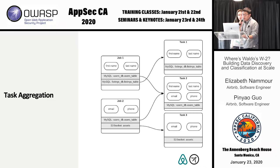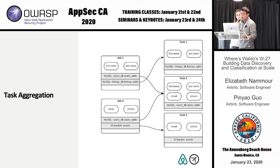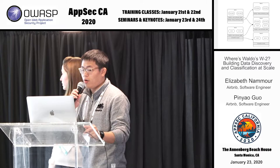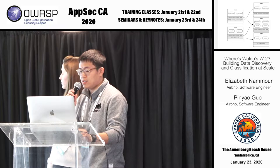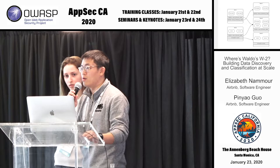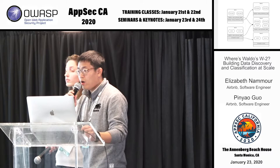Here's an example showing two jobs. Job one schedules to scan first name and last name on the users table and also the listings table on MySQL database. Job two is scheduled to scan email and phone number on the MySQL users table and also an S3 bucket. When we do task aggregation, for each task we scan only one data target but aggregate all data elements of interest together into the same task. This way we avoid spending computational resources on the same data target again and again. Now I will pass back to Lizzie to talk about the scanning component.